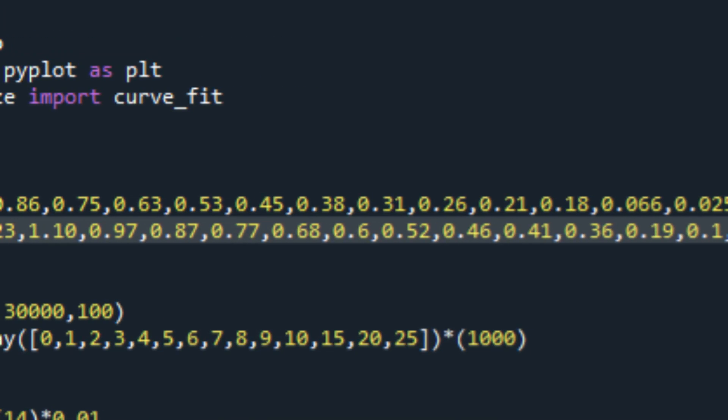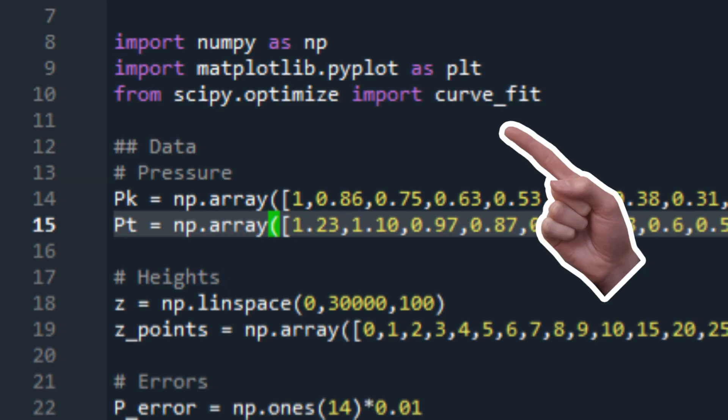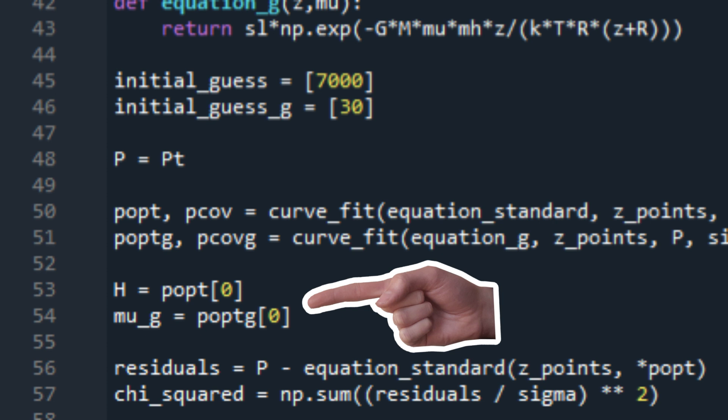I put my measurements from the game into arrays, define the functions that describe the curves that depend on the variable that we want to find, either the scale height or the mean molecular weight, and we use the curve fit library to run a little algorithm. This will give us the values of these variables that would result in the best fit.